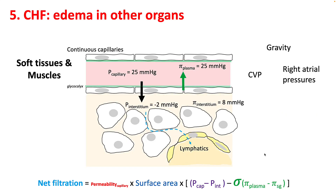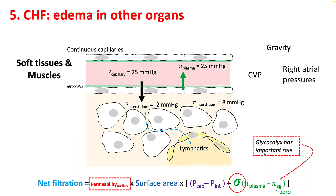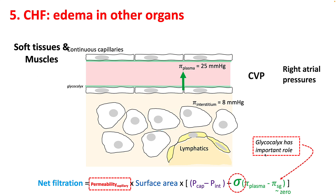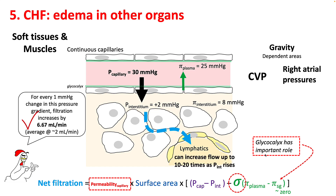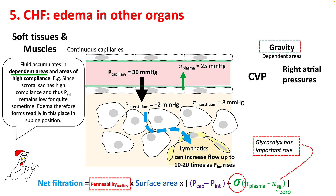In soft tissues and muscles, you have continuous capillaries which have a high reflection coefficient, and in these places the glycocalyx plays a very important role in limiting the amount of filtration. Because of elevated venous pressures, capillary pressures are high, resulting in more hydrostatic gradient. For every one millimeter change in this pressure gradient, filtration increases by 6.67. Fluid will accumulate more in dependent areas because of gravity and in areas of high compliance, where the change in interstitial pressure will be much slower.